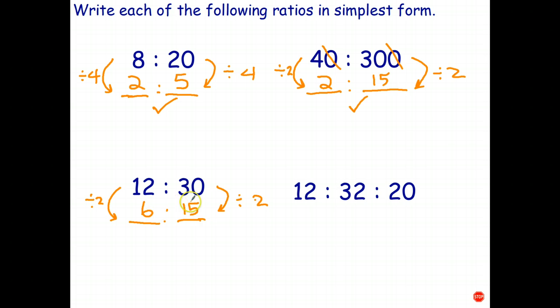Now hold on a sec. 6 and 15 also have a common factor. 3 goes into both of those. So what I have to do here, should have done the underlines first, is I can further simplify. 6 divide 3 is 2. 15 divide 3 is 5. So now I get the ratio of 2 is to 5. And that is in lowest terms. There's no common factor other than 1. So if you end up dividing by a factor, but not the highest common factor, you might have to find the simplest form in two or more steps.